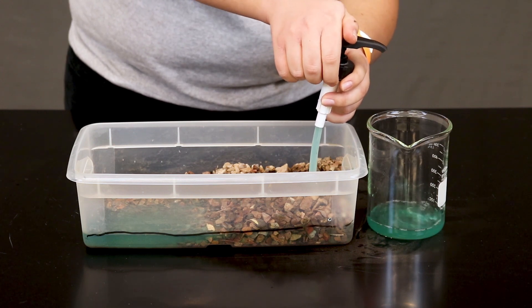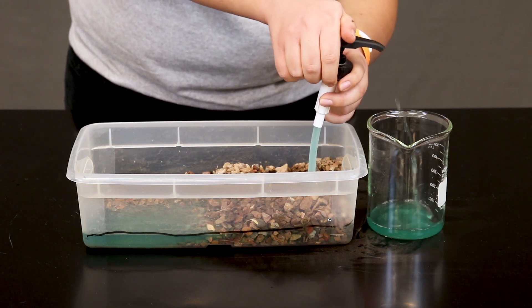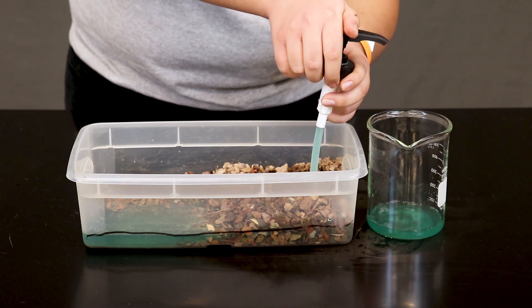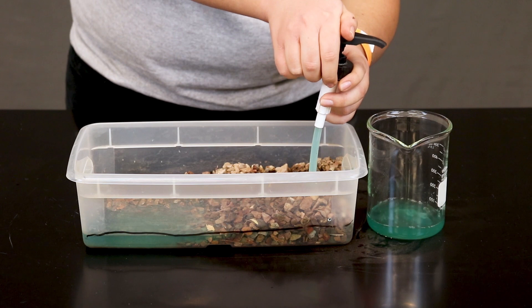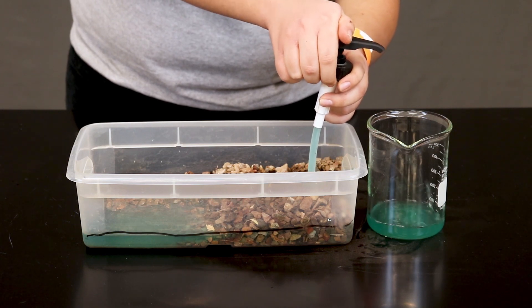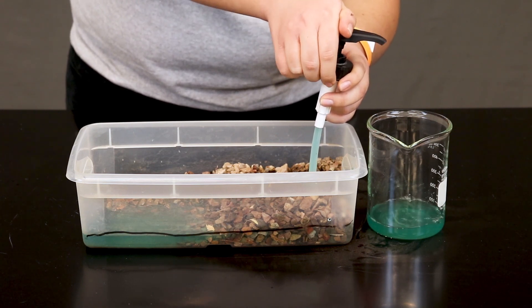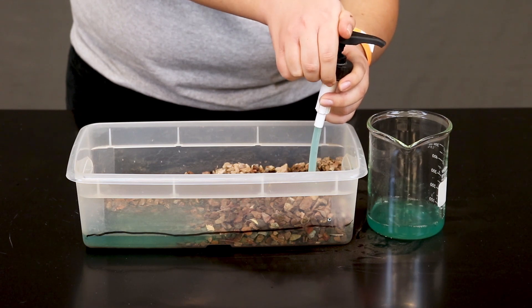When cooking, try to think of some of the ways that you use water. Maybe to do your laundry. Think about the ways that we use water and the way that that might affect how much groundwater is available.